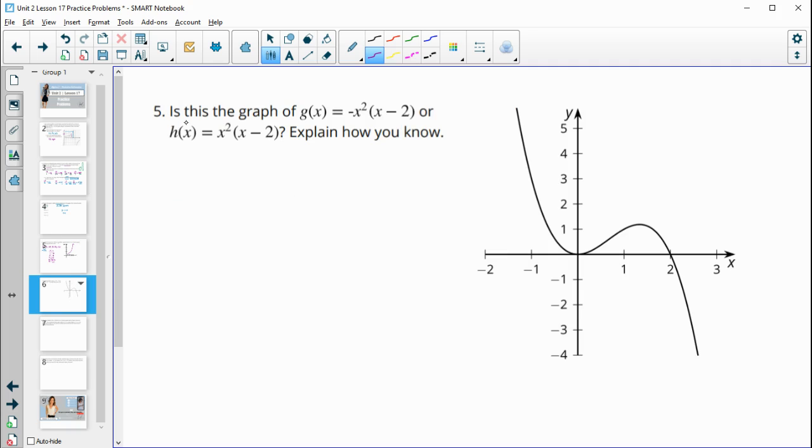Number 5, is this the graph of g of x or h of x? And explain how you know. So we see this negative x squared, and then we'll have it times x. So the lead term of g of x is negative x cubed. And then we have x squared times x for h of x. So this lead term is x cubed. So then it's thinking about if the leading term is negative or positive, which way does this graph go? So remember, if the leading term is negative, it starts up and goes down. So kind of the overall behavior is it's going down. And so this one is g of x.